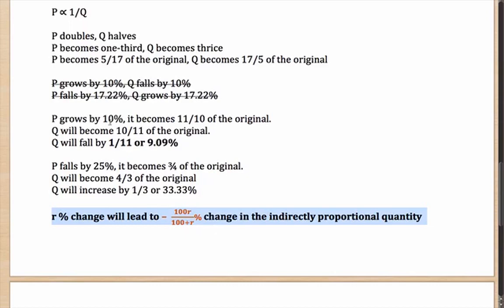Try it out with 10%. It was growing by 10%, which means R is plus 10. So this becomes 1000/110. 1000/110 is the same as 100/11 with a negative sign. 100/11 with a negative sign is minus 9.09%, or it has fallen by 9.09%.